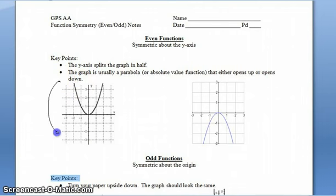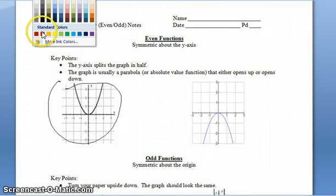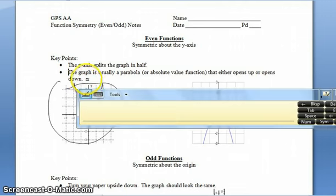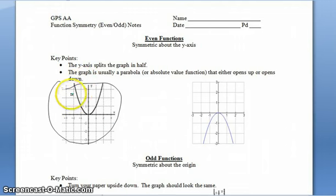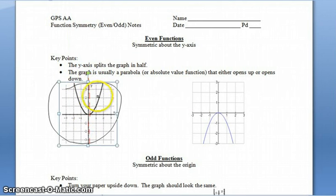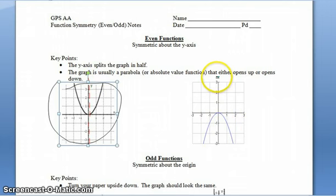Even symmetry — if you look at this picture, even symmetry is when a function on a graph has symmetry about the y-axis. That means if you were to draw a vertical line right down the y-axis, it cuts the graph exactly in half. One side of the graph is a mirror image of the other. The parabola can be upside down and you still have what we call even symmetry.